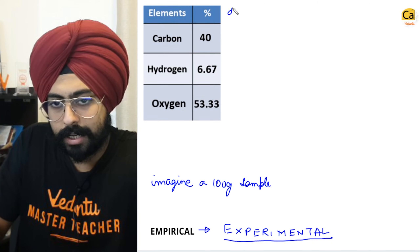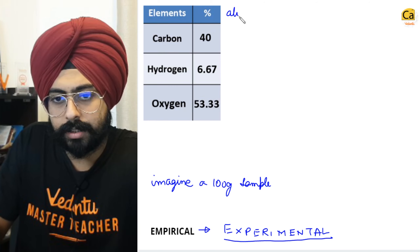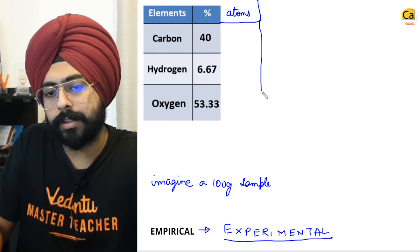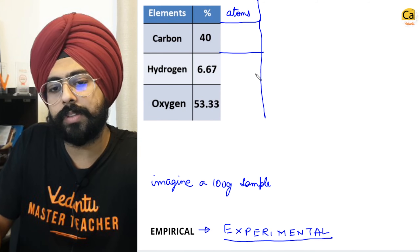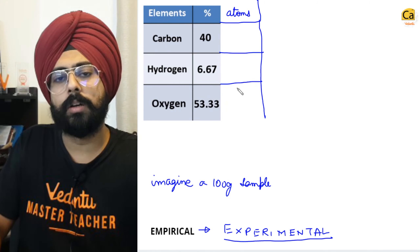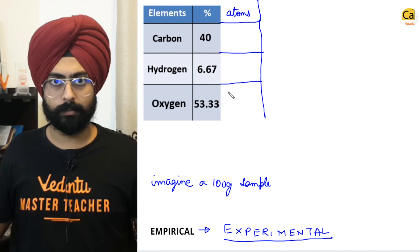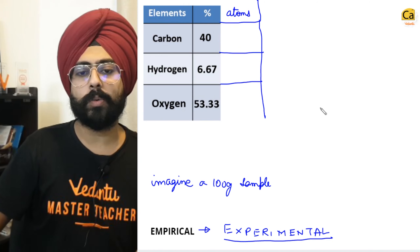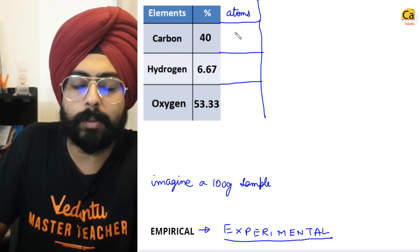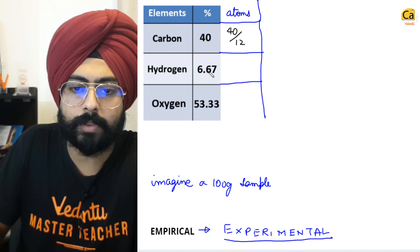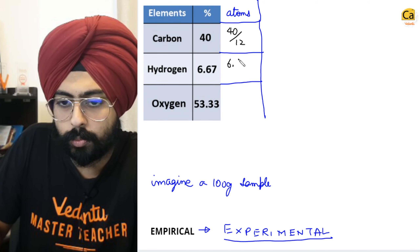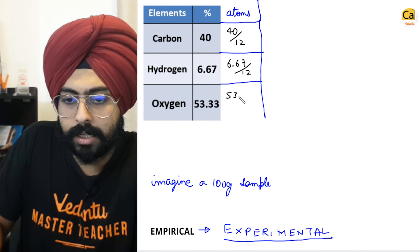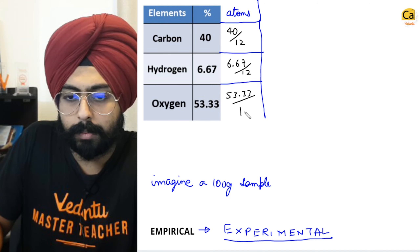Can you calculate the number of atoms of each of these? Given weight upon atomic weight. Number of moles of carbon atoms: 40 ÷ 12. Number of moles of hydrogen atoms: 6.67 ÷ 1. Number of moles of oxygen atoms: 53.33 ÷ 16. Whenever I'm saying 'atoms' here, I mean moles of atoms, because the weights are in grams.